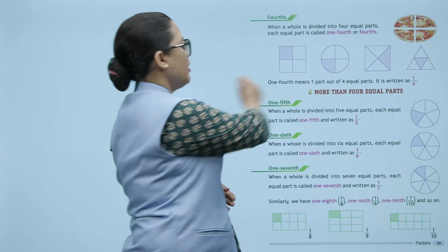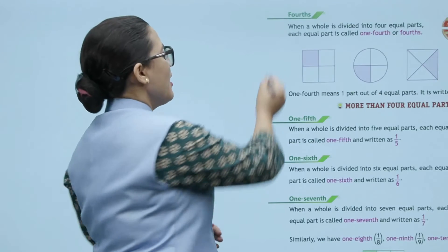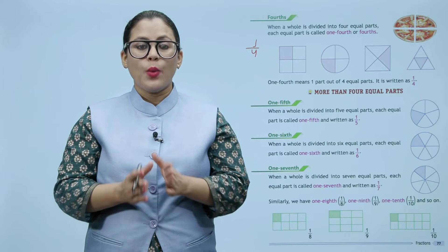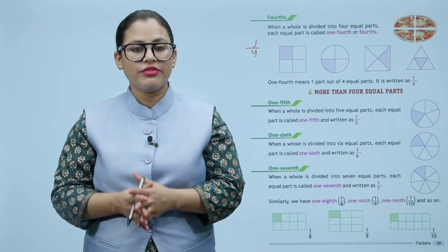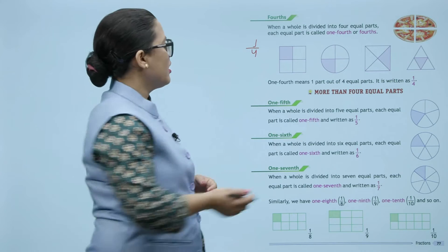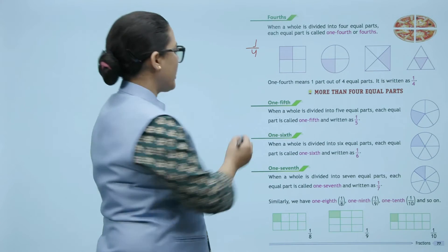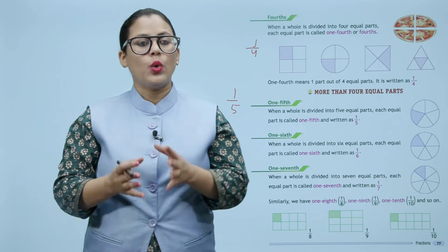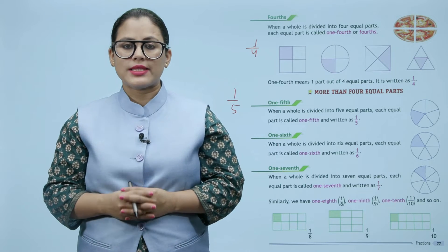If a whole is divided into five equal parts, each equal part is called one-fifth, written as one by five. This figure is divided into five equal parts. If a whole is divided into six equal parts, each equal part is called one-sixth, written as one by six.